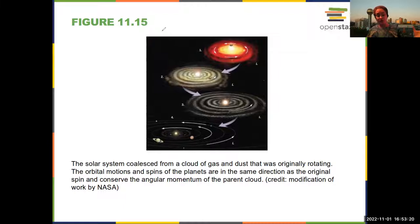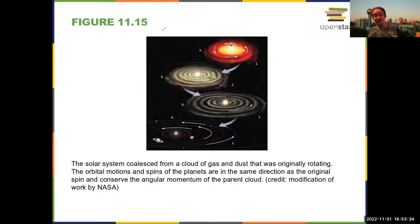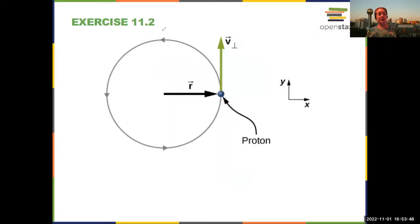Our solar system coalesced from a cloud of gas and dust that was originally rotating. Because angular momentum is conserved, everything continues to rotate in the same direction it originally was rotating — which is pretty cool. Another application: what's rotating tends to keep rotating unless you apply a torque to stop it. You can do R cross V and get the angular momentum of a proton rotating in a cyclotron — in this case, the angular momentum is going to be out of the board towards you.